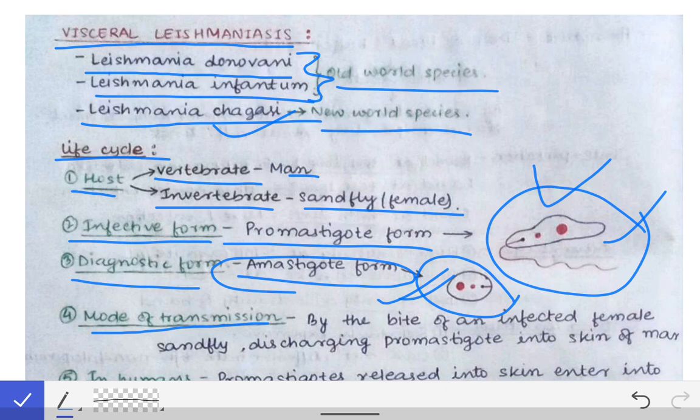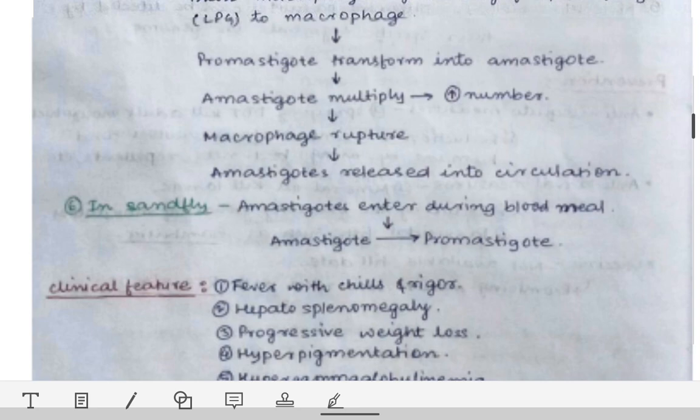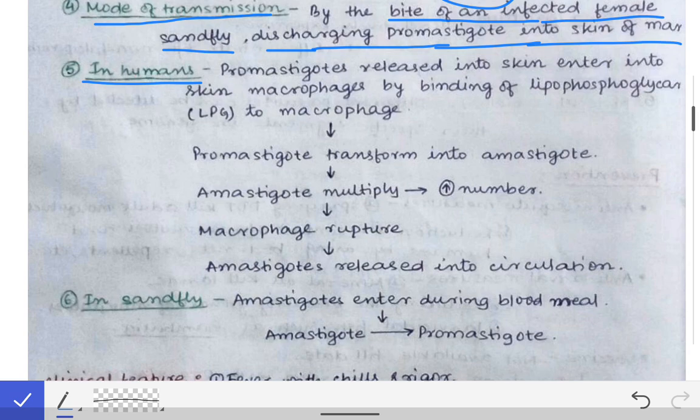The mode of transmission of Leishmania is via the bite of an infected female sand fly. While biting, she discharges the promastigote form into the skin of the human.